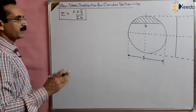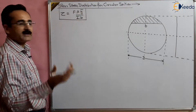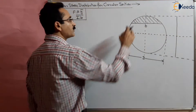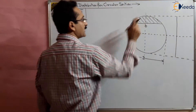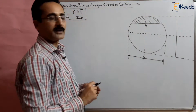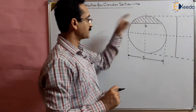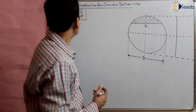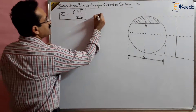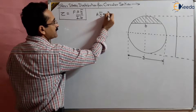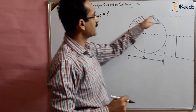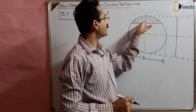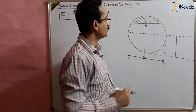Now, in a triangle and rectangle we were able to find out Aȳ very easily — this was the moment of the area. But for a circular section, we first have to find out this area and then the moment of this area, which seems very difficult. So what we can do is make it further simpler. Finding Aȳ is a difficult task; we have to take the area of this section and then take the ȳ of this part.